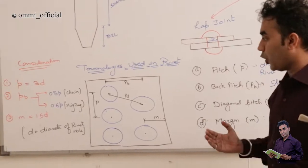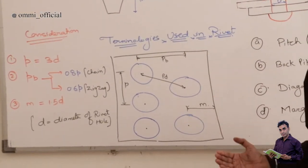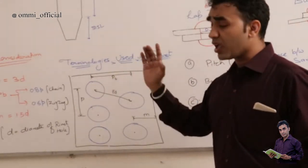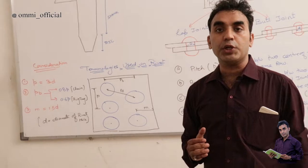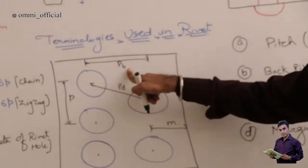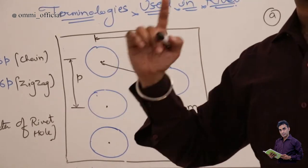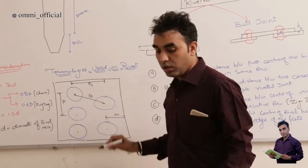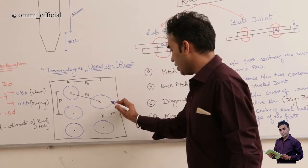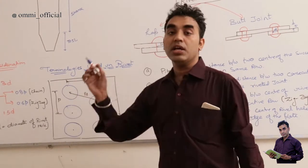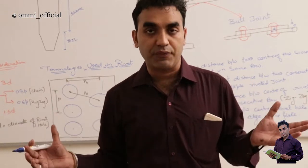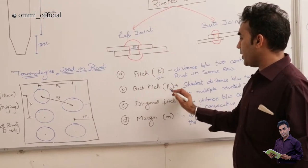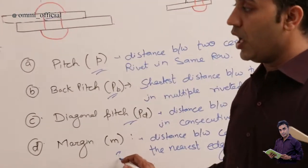Before moving on to design and failure, we need to understand the terminology used in riveted joints. The center distance between two rivets is known as pitch, denoted by small p. The consecutive distance between two rivet centers measured row-wise is the back pitch. If you go in a zigzag manner successively, it is known as diagonal pitch, pd. We also have the margin — a small distance between the rivet and the last edge — to prevent tearing. So we have four terms: p, pb, pd, and margin (m).